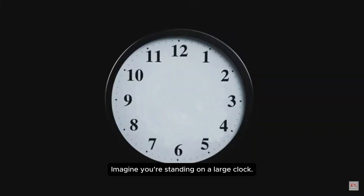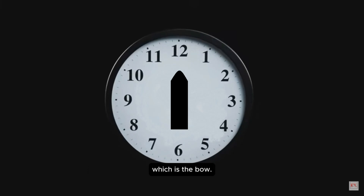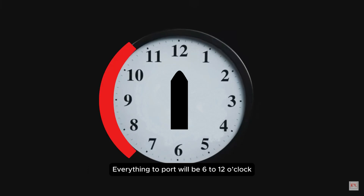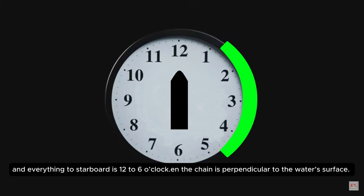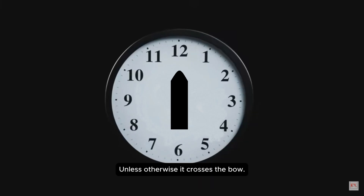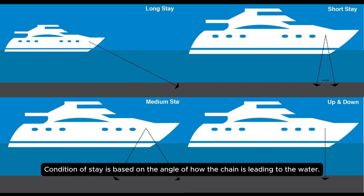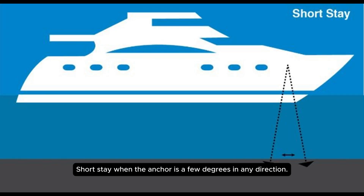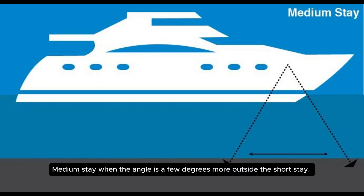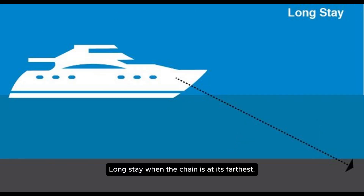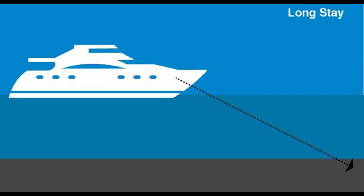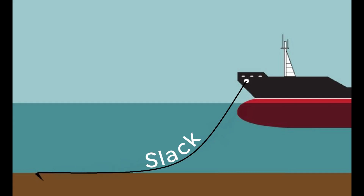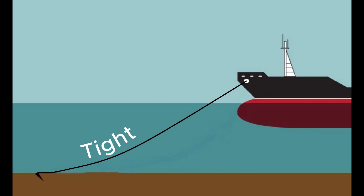Imagine you're standing on a large clock. You base the directions from the 12 o'clock mark, which is the bow. Everything to port is 6 to 12 o'clock and everything to starboard is 12 to 6 o'clock, unless otherwise it crosses the bow. Condition of stay is based on the angle of how the chain is leading to the water: up and down when the chain is perpendicular to the water surface, short stay when the anchor is a few degrees in any direction, medium stay when the angle is a few degrees more outside the short stay, and long stay when the chain is at its farthest. Following the condition of stay is the tightness of chain — whether it's slack, moderately tight, tight, or very tight.